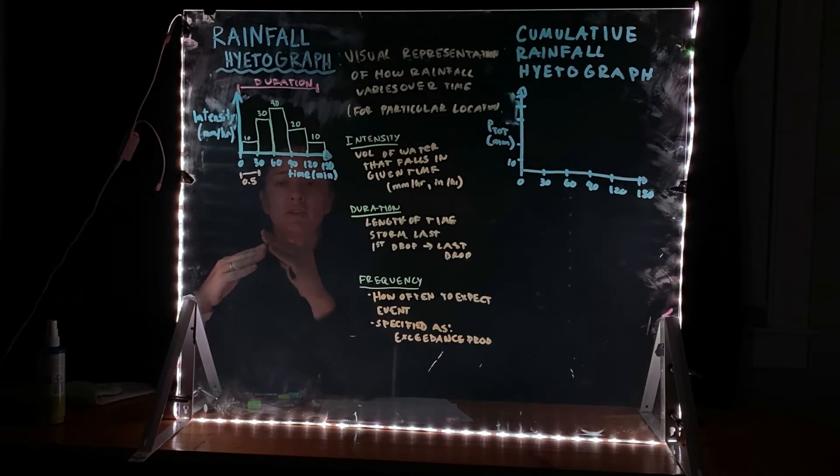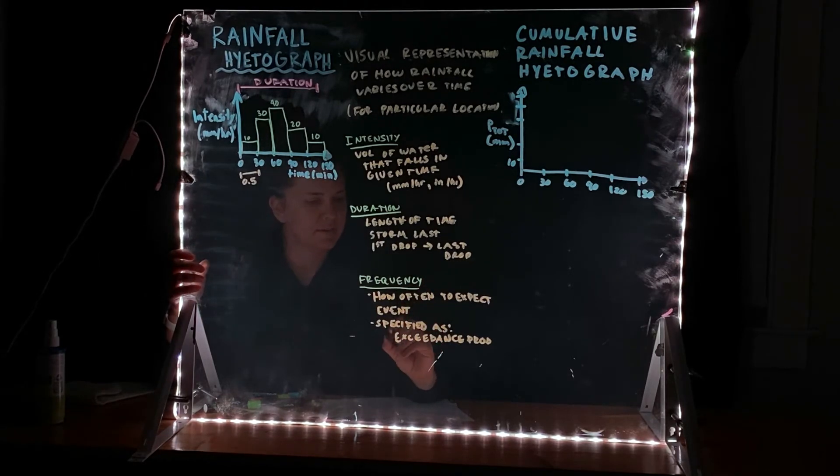So what is the probability that you will see a storm of this much intensity in this duration? What's probability that you get this much or more? That's what exceedance probability means. So this much or more is an exceedance probability or as what is called a return period.